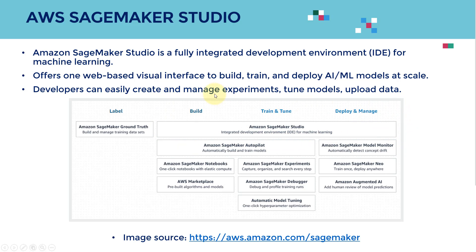You will notice that labeling cannot be done within Amazon SageMaker Studio. The labeling process is done separately with Amazon SageMaker Ground Truth. But once you have the data, you will be able to do everything afterwards — from building the model, to training and tuning, to deploying and managing — all within SageMaker Studio.